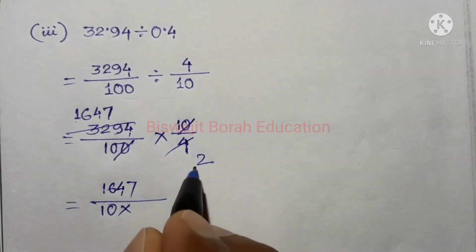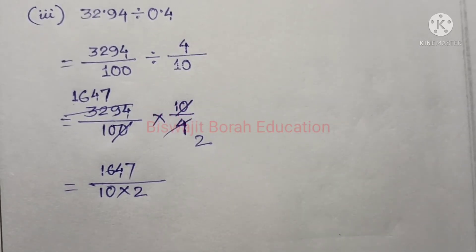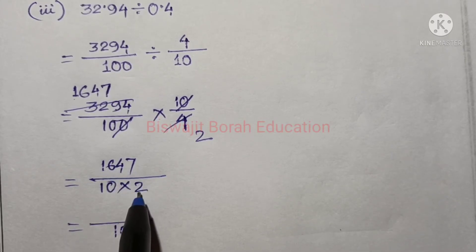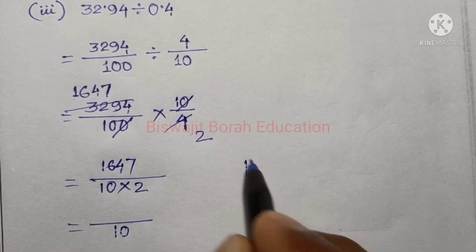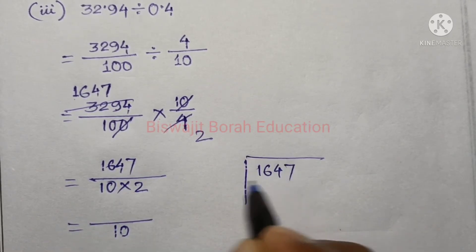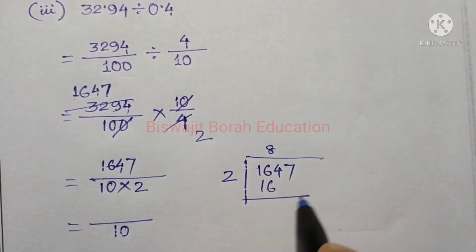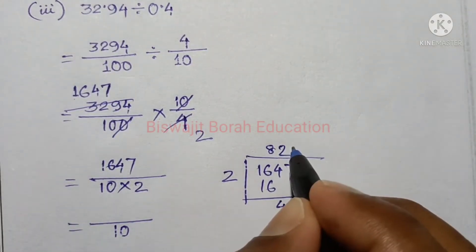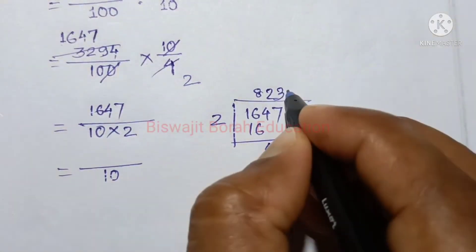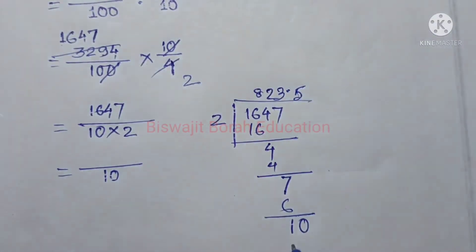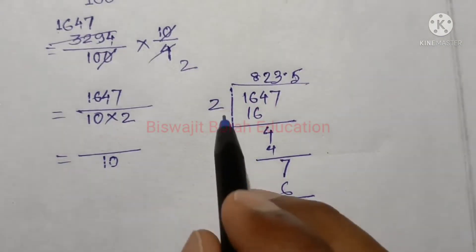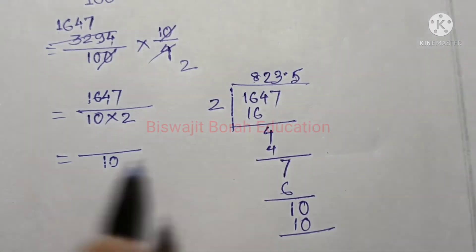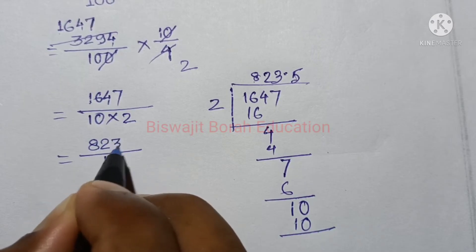We have 2 plus 2. Next, we have 12 to 12, and we have 1647 by 2. We have 1647. And then we have 1646, and we have 823.5.